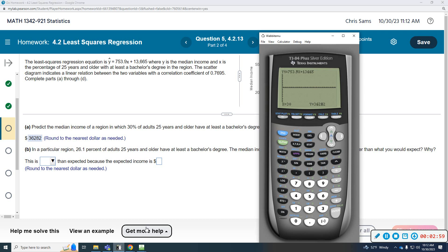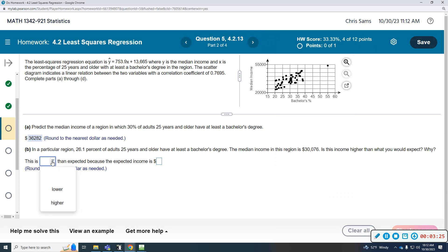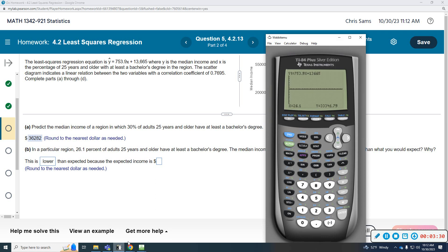So what we would do, go to our calculator again, and once I hit trace, I can just input any number I want. So now I can just type 26.1 and then hit enter. Based on what I get when I hit 26.1, they give me $33,341. We're predicting something higher. They're giving us a lower value. So we would say this is lower than expected because the expected income, based on our model, is $33,342.